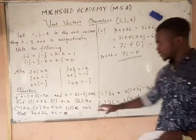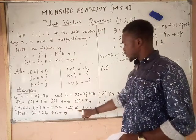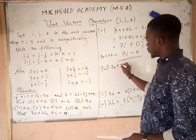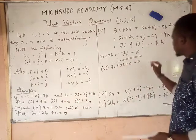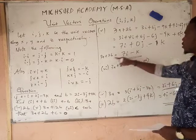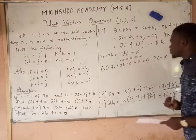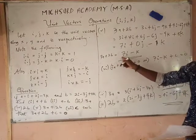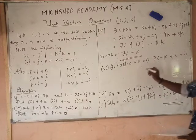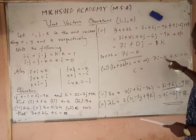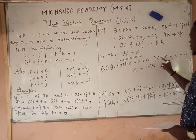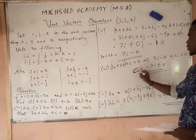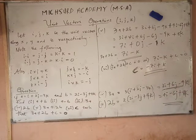The next question is to find c such that 3a plus 2b plus c will be equal to zero. So 3a plus 2b plus c equals zero. We have already gotten 3a plus 2b to be equal to 7i minus k, so substituting: 7i minus k plus c equals zero. We make c the subject: c will be equal to minus 7i plus k. So this becomes our result for the vector c.